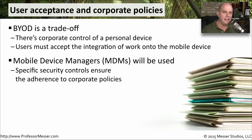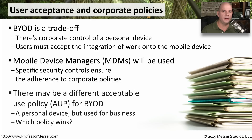The MDM is a way of connecting to the mobile device from one central management console and controlling and managing almost every aspect of the way that mobile device works. That way, you can define some very specific corporate policies and then apply those policies through the Mobile Device Manager. Your organization probably has an acceptable use policy, or AUP, for devices on your desk. These acceptable use policies define what you can do on that device, what you can go to on the internet, and how you're able to use that device for both work and personal use.